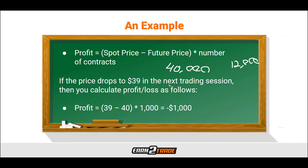We calculate the profit or loss for a futures contract buyer using this equation: Profit = (Spot Price − Futures Price) × Number of Contracts. If the price were to drop to $39 in the next trading session, profit = ($39 − $40) × 1,000, which means we net negative $1,000. If it goes in our favor and rises to $41, this would obviously be a positive number.